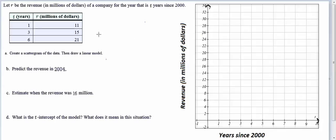For example, if we think about this first data value it's been one year since 2000 so the year would be 2001 and their revenue has been 11 million dollars. We can see as time is increasing the company is making more.